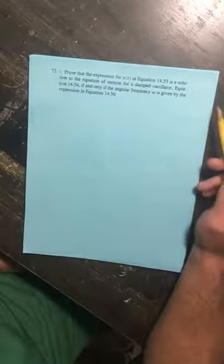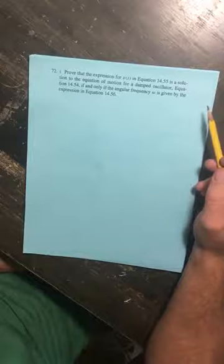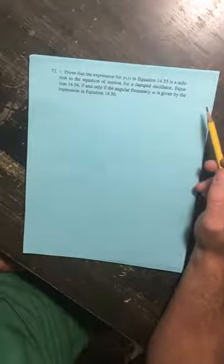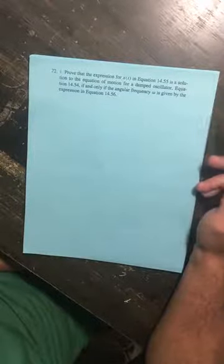Alright guys, Dr. Kolbreth here with chapter 14, number 72. It says, prove that the expression for x of t in equation 14.55 is the solution to the equation of motion for a damped oscillator, which is equation 14.54, if and only if the angular frequency omega is given by the expression in equation 14.56.